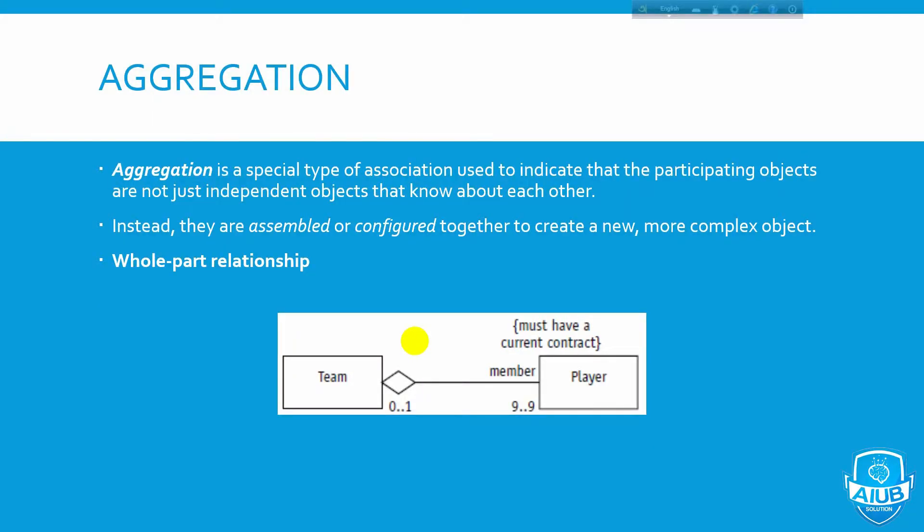We don't have a team, but we still have a player. If we don't consider this, we don't have aggregation — because in aggregation the parts can exist independently of the whole.